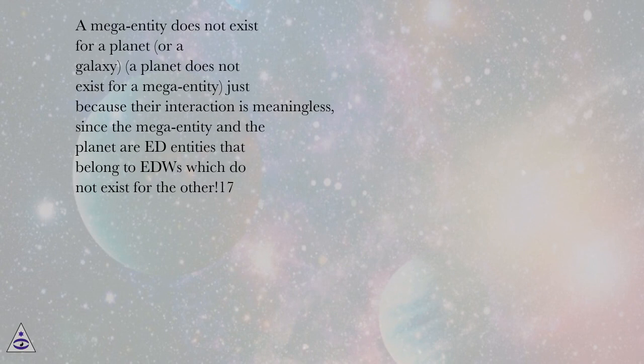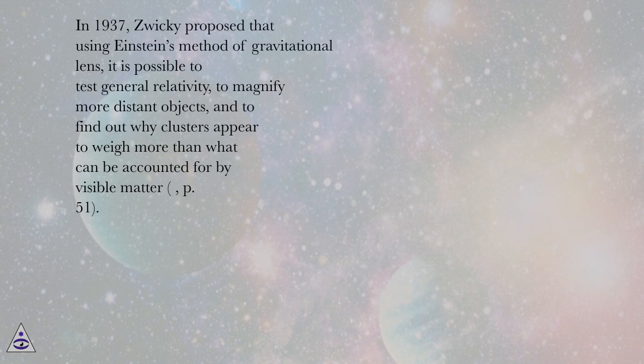In 1937, Zwicky proposed that using Einstein's method of gravitational lens, it is possible to test general relativity, to magnify more distant objects, and to find out why clusters appear to weigh more than what can be accounted for by visible matter, page 51.